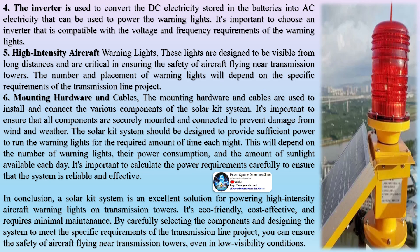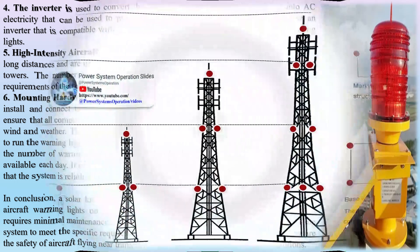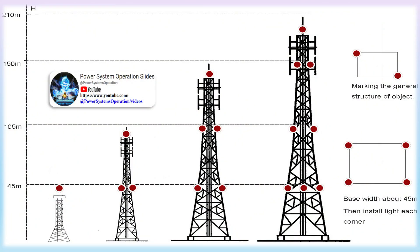When it comes to transmission line projects, safety is always a top priority. One of the key safety measures for transmission towers is the use of high-intensity aircraft warning lights. These lights are critical in helping to prevent collisions between aircraft and transmission towers, especially in low visibility conditions. A solar kit system can power high-intensity aircraft warning lights for transmission line projects.